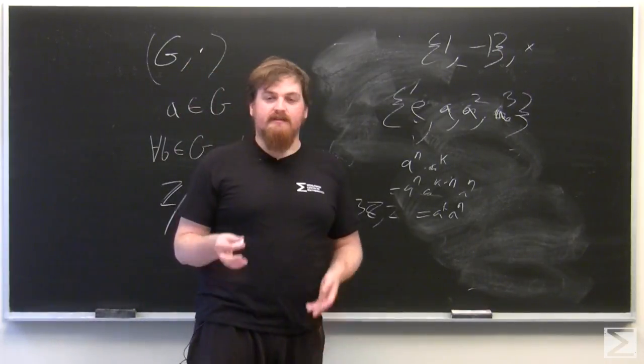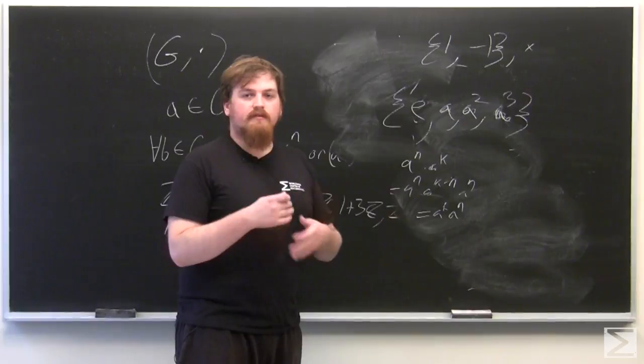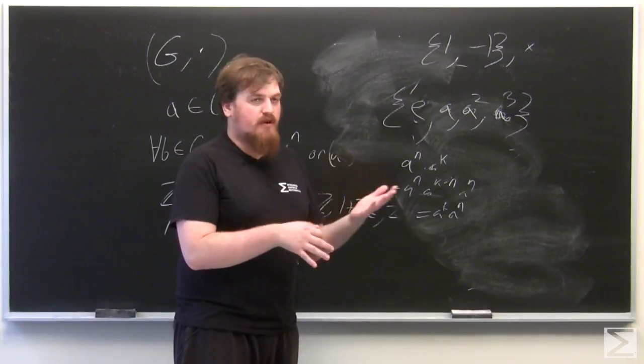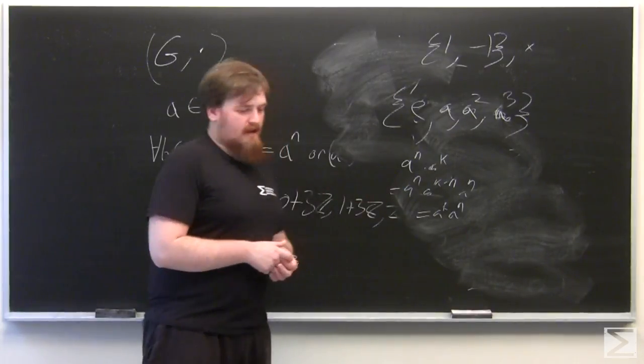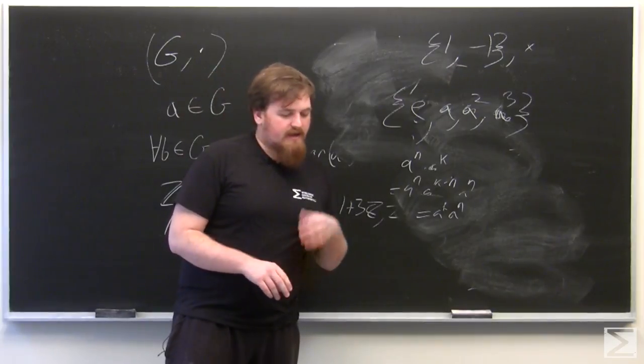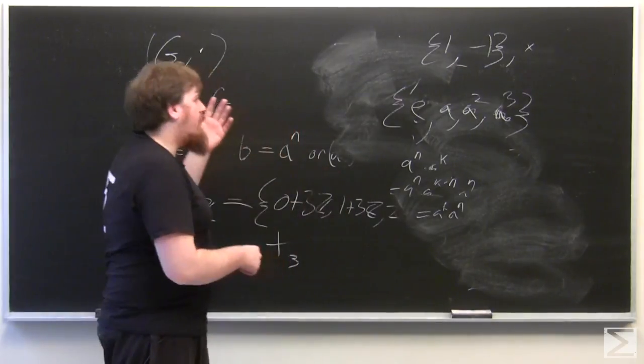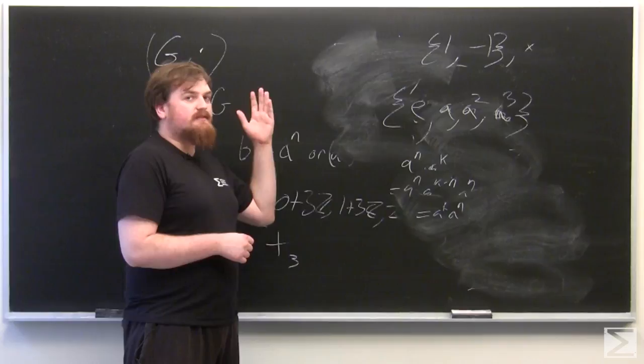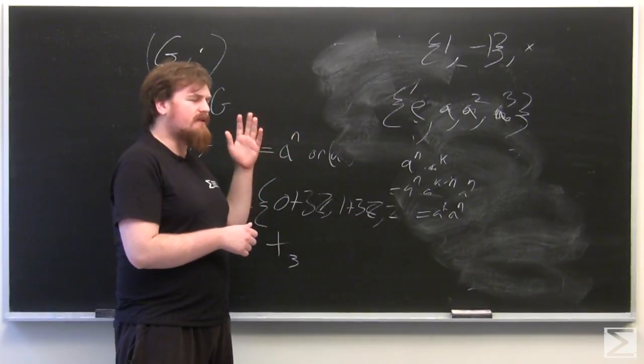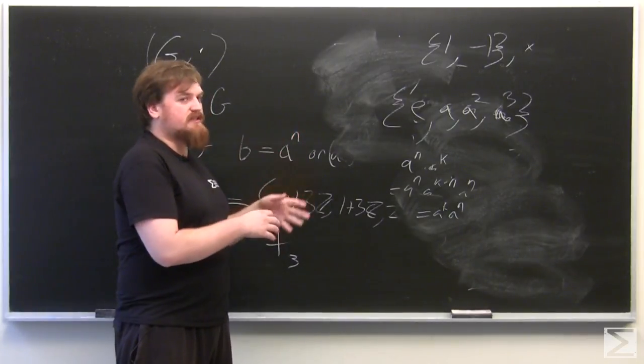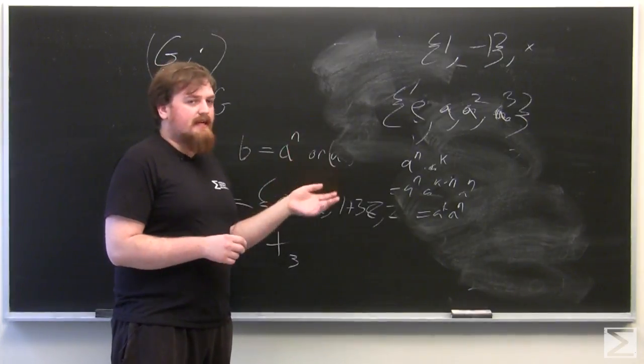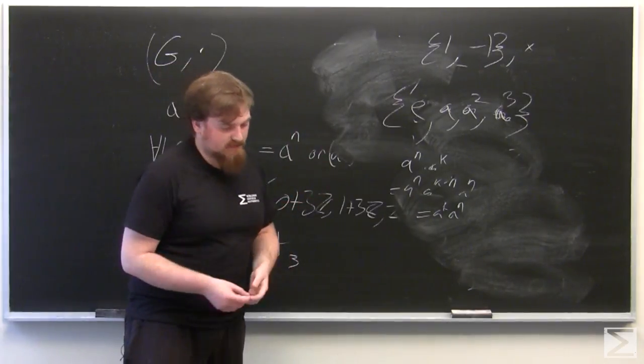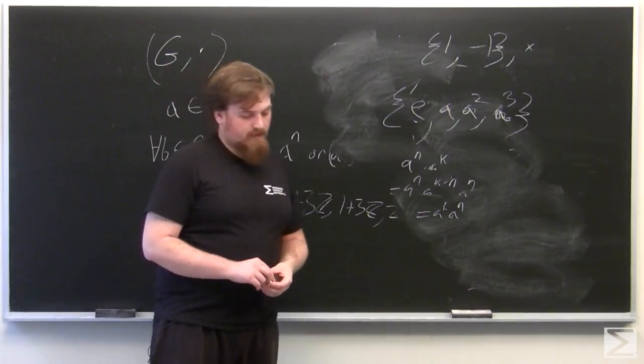So when I said earlier that a cyclic group is generated by a privileged element, that means that it's the same thing. Since the cyclic group has all its elements expressible just in terms of A, so the set that contains just A generates this cyclic group. That's the formal term for it.